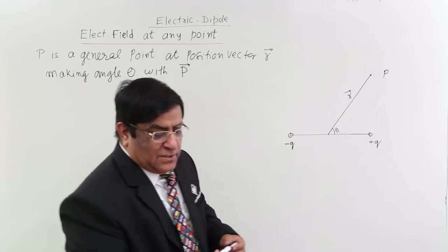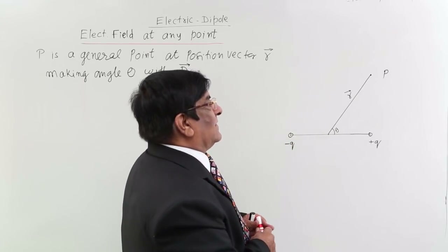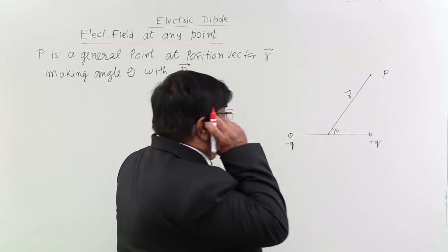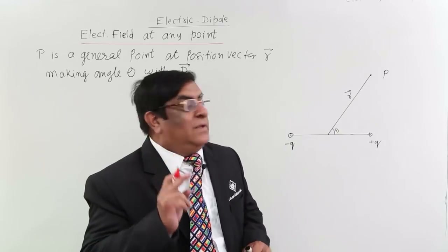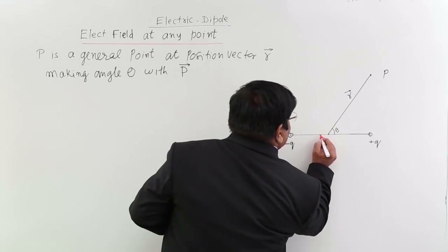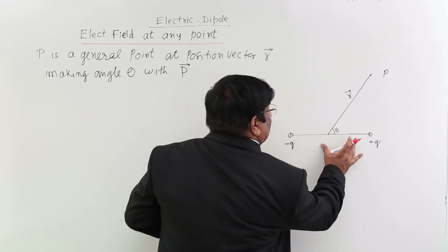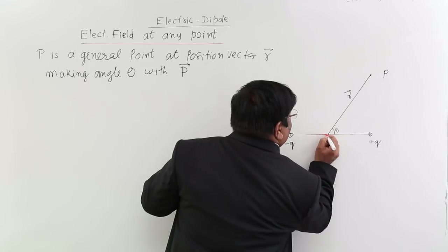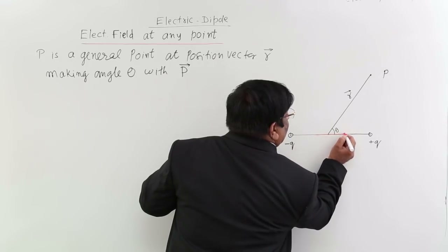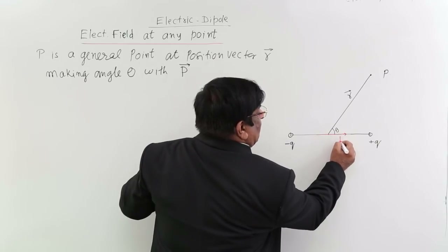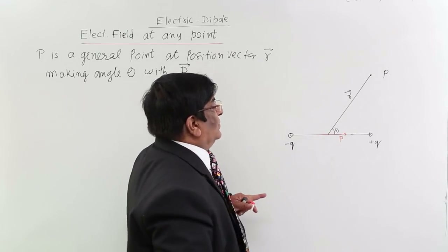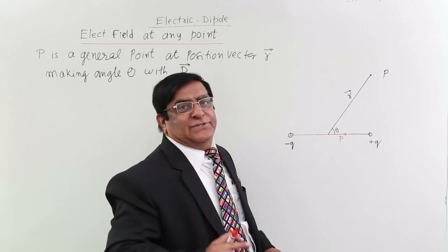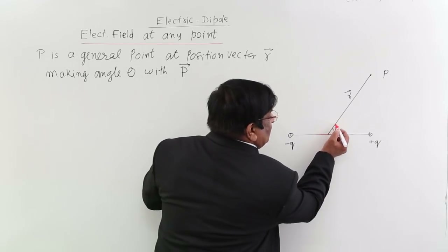For this we take help of our earlier two results. We know the electric field due to a dipole on the axial line and on the equatorial line. As a shortcut, since the dipole moment p is a vector quantity, we can represent it graphically and resolve it into two components.